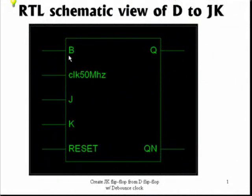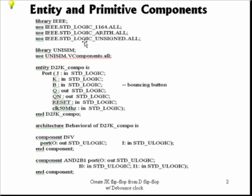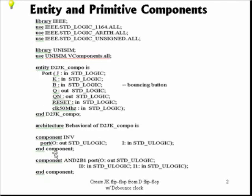Internally, in the VHDL code, we're going to debounce this mechanical switch by using code. The typical code is given here — the usual library IEEE and the usage of their IEEE standard, including the 1164 arithmetic and sign. In order to invoke or use the primitive component, we use the library Unisim and use Unisim dot VComponents dot all.